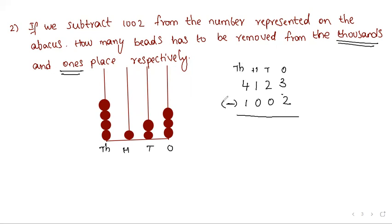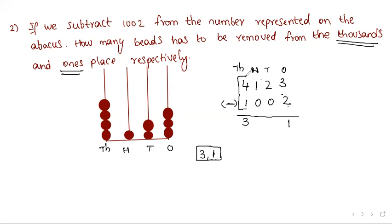Ones place, tens place, hundreds place, thousands place. We are only asked about the thousands place and ones place — we don't discuss the other two places. The answer is three comma one: three beads removed from the thousands place and one bead removed from the ones place.